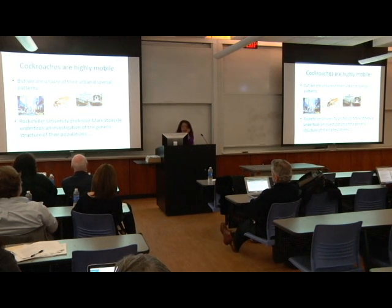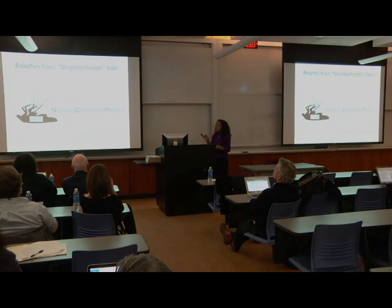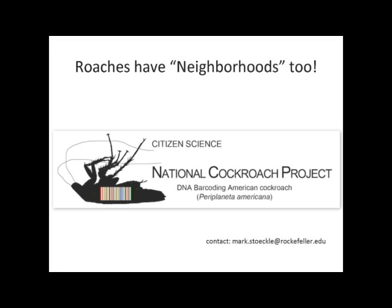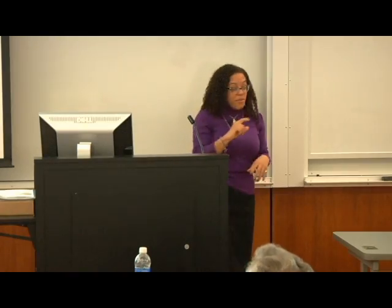Mark Stokoe from Rockefeller University decided to do a citizen science project to ask questions specifically about this, called the National Cockroach Project. They encouraged people to mail in cockroaches found in their homes. They would do a barcode using cytochrome oxidase I, a mitochondrial protein-coding gene with a hypervariable region that is species-specific and very good for distinguishing variation among populations. They found that cockroaches do have neighborhoods: the ones in Brooklyn stayed in Brooklyn, the ones in the Upper East Side stayed there, and the ones in Staten Island stayed in Staten Island.